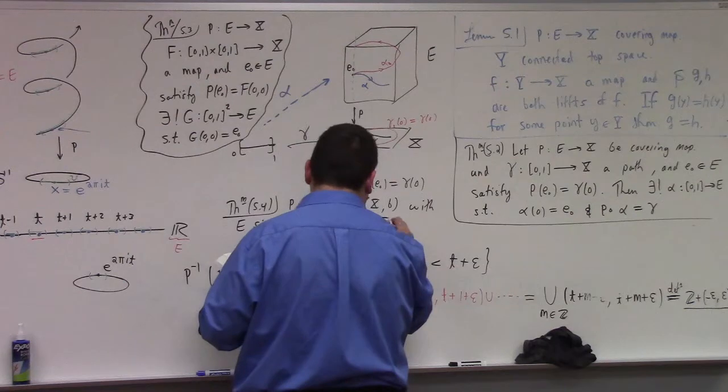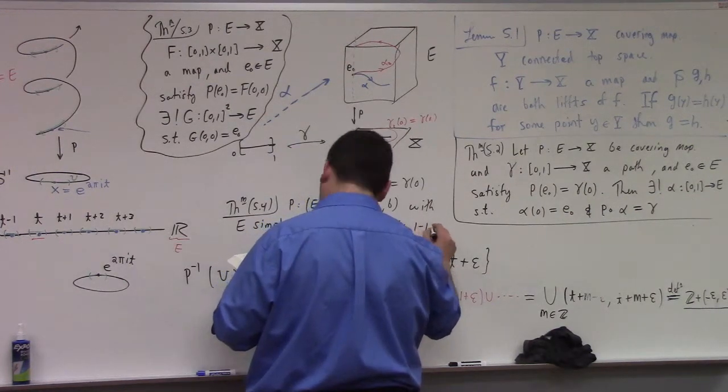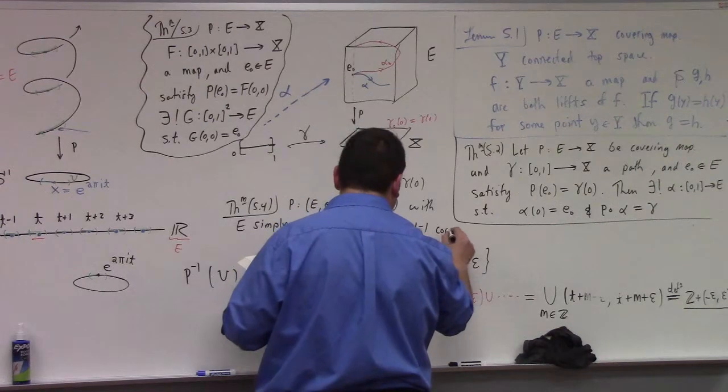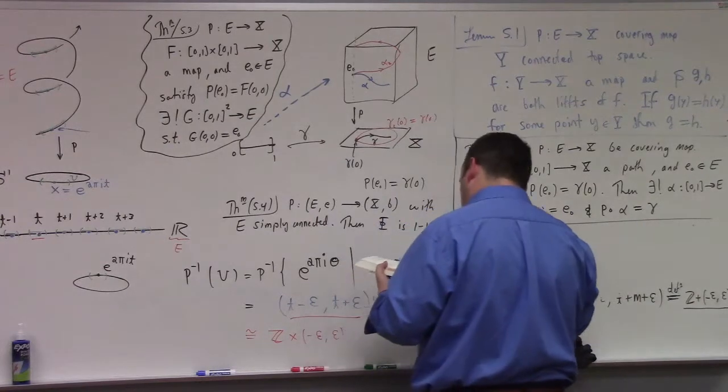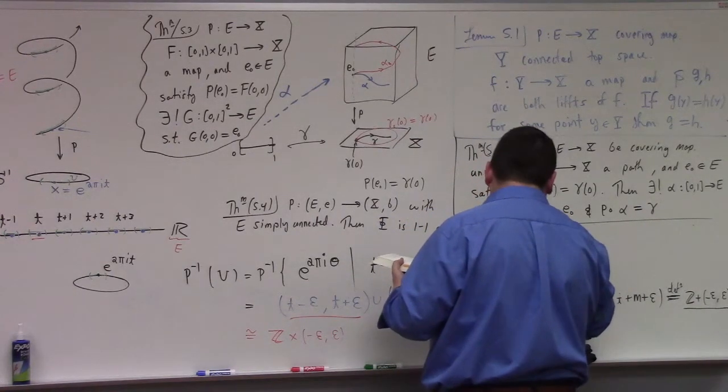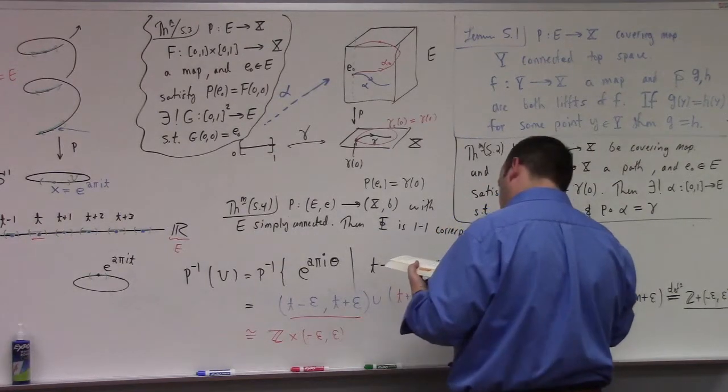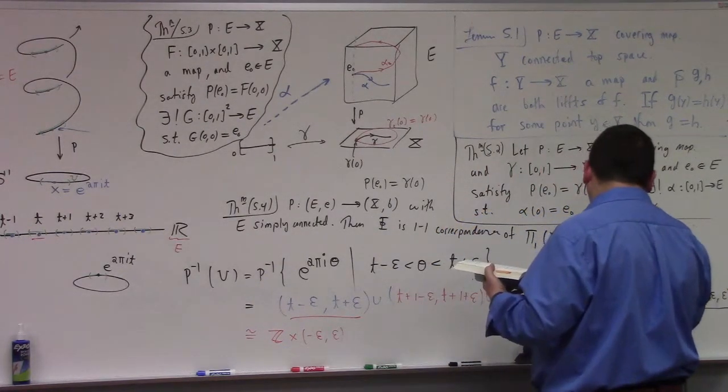Then Φ, which I'll define shortly here, is a one-to-one correspondence of the fundamental group of X based at b and the fiber over b.